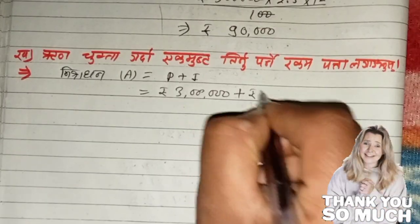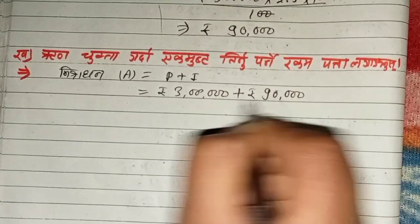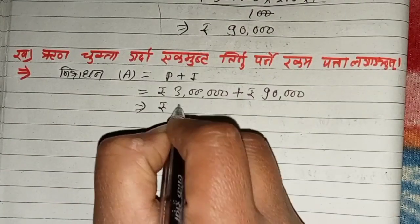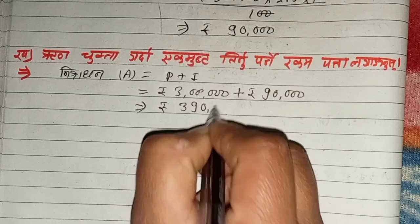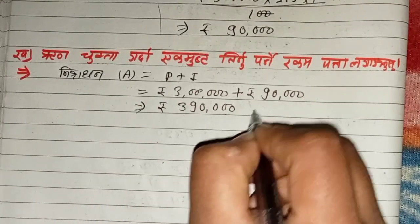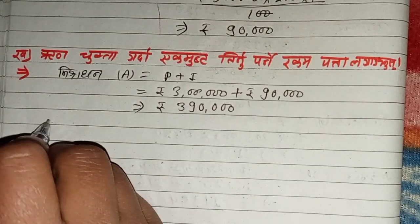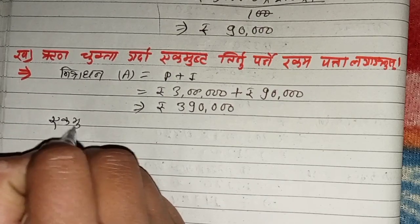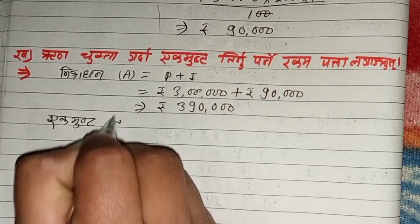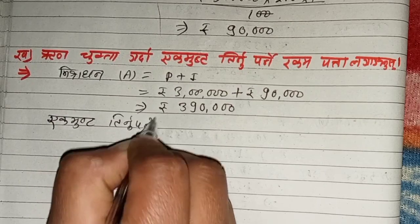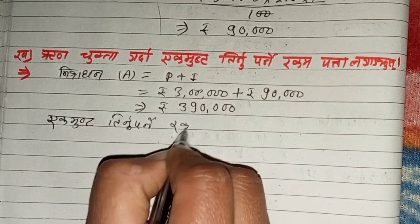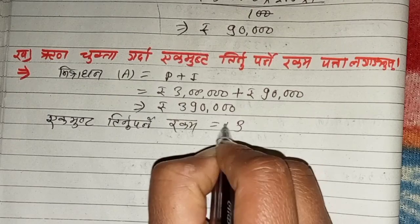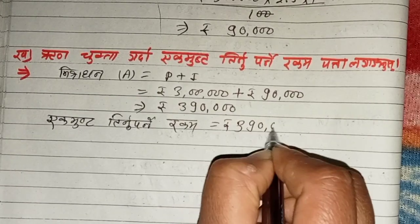If you look at the value of negative value, then you will add the value of negative value of negative value. That's the answer. Now, you will add the value of negative value of negative value.